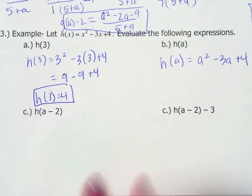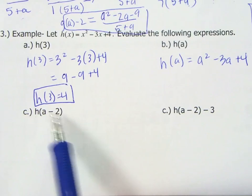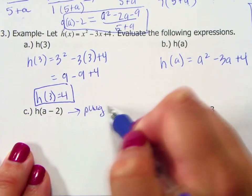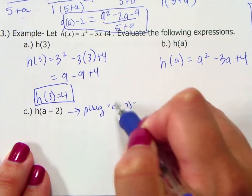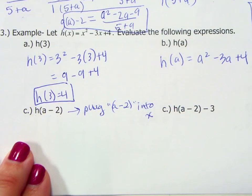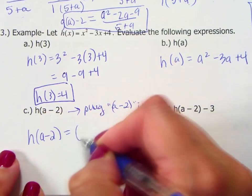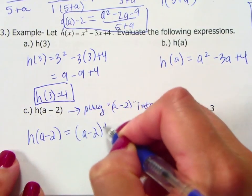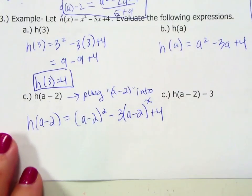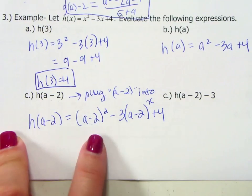If you look at c, now we are doing something a little bit different. We are finding h(a minus 2). That means we are plugging the whole quantity a minus 2 into x. We are plugging that whole quantity a minus 2 in for x. So h(a minus 2) will be the quantity (a minus 2) squared minus 3 times (a minus 2) plus 4. So wherever I had that x, I plugged in the quantity a minus 2.